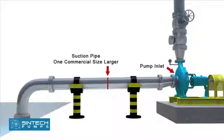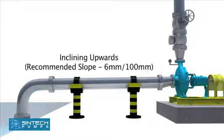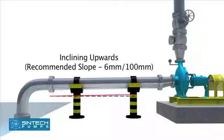The suction pipe size should be at least one commercial size larger than the opening of the pump inlet. All suction pipes should have a continuous rise to the pump suction inlet. 6mm per 100mm slope is recommended.